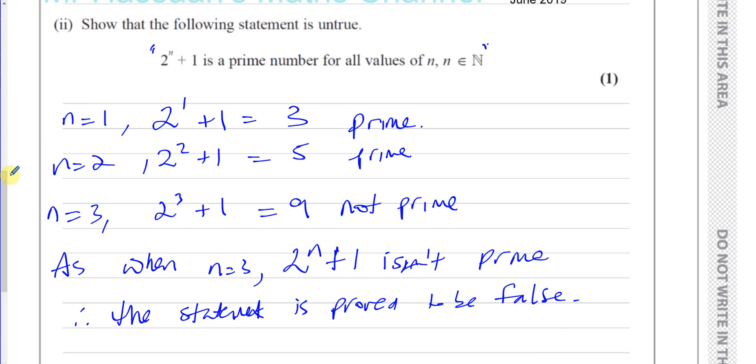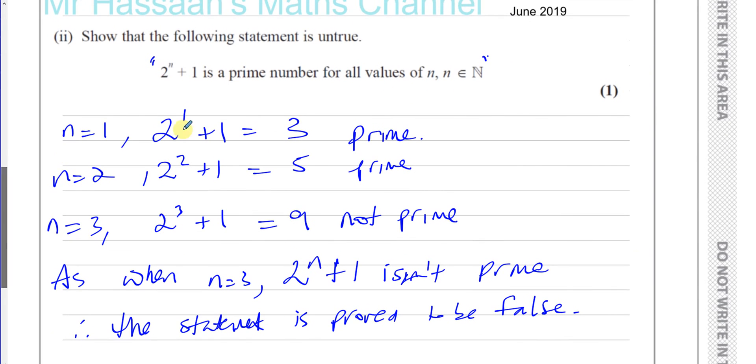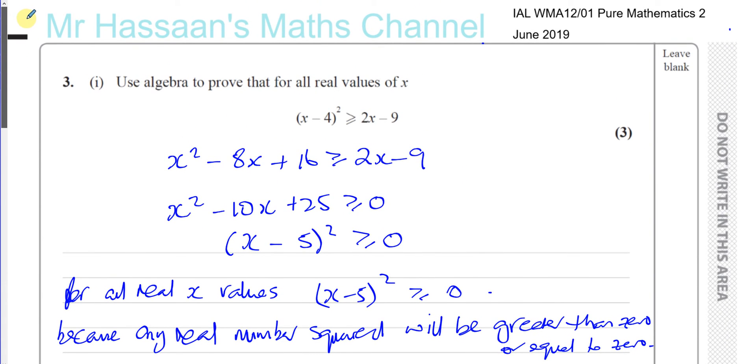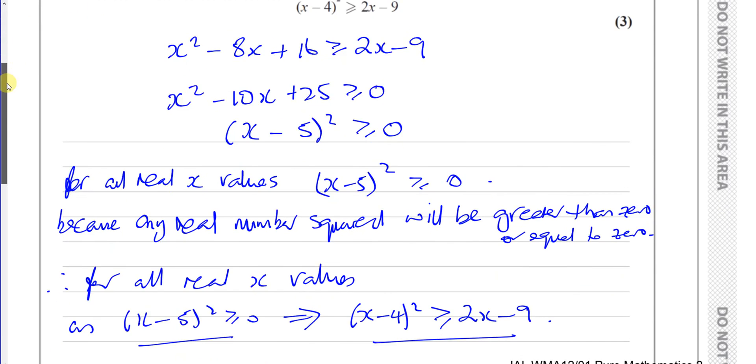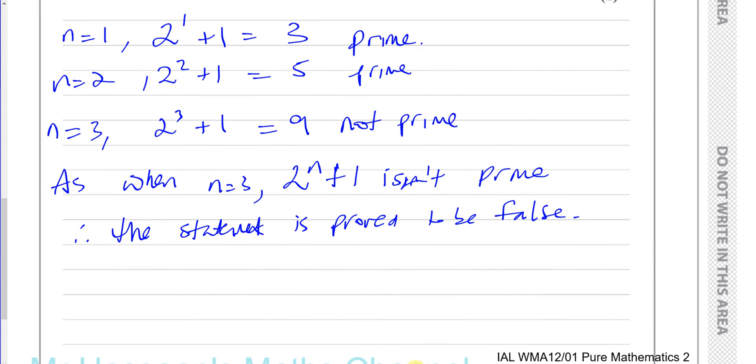So that's one mark for that. So that's pretty simple. So that's proof by counter-example, proving something is false by counter-example. And there's question number 3. Pretty easy proof question here. A lot of students were afraid of this topic, but when it came up, it wasn't too bad. All right, so thank you for watching.